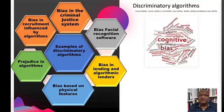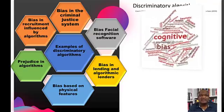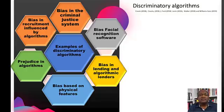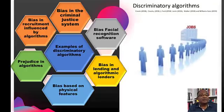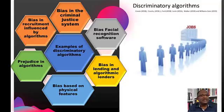Developers' influence can also lead to discriminatory algorithms. Developers' influence on data creates gender bias as well as other biases. Algorithms can also lead to biases in recruitment. According to one report by William Guts, Amazon ran into trouble with an AI-powered recruitment tool that discriminated against women.